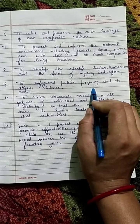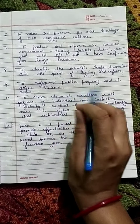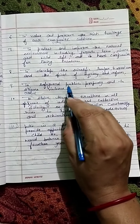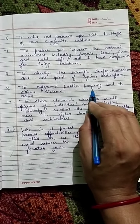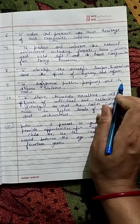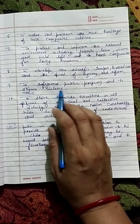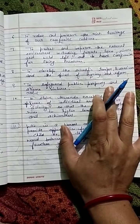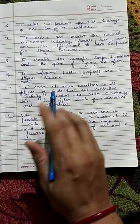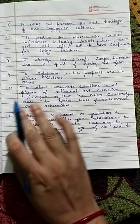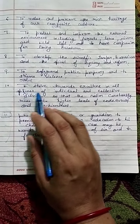The ninth duty is to safeguard public property and to abjure violence. यानि आपको जो government और जनता की property है उसको save करना है। साथ ही साथ आपको अहिंसा का पालन करना है — government या किसी भी तरह की property को आपको destroy नहीं करना है।